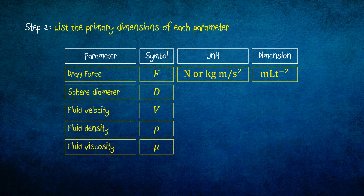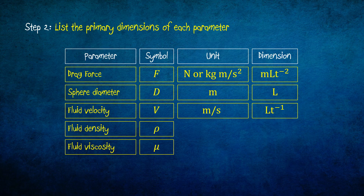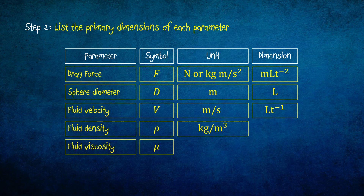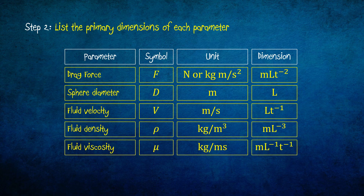The unit for diameter is meter, so its dimension is L. For fluid velocity, the unit is meter per second and the dimension is LT to the power negative 1. The unit for fluid density is kilogram per meter cubed, and its dimension is ML to the power negative 3. The unit for fluid viscosity mu is kilogram per meter second, so its dimension is ML to the power negative 1, T to the power negative 1.